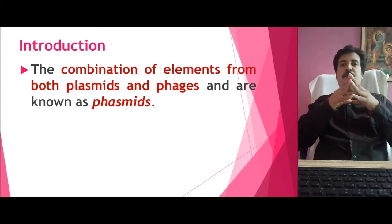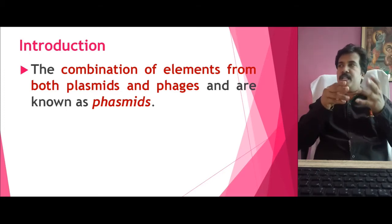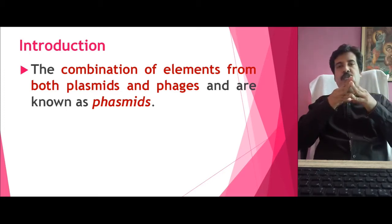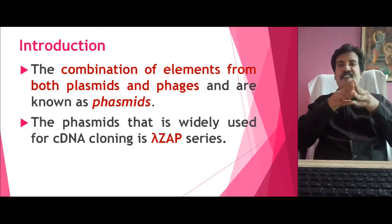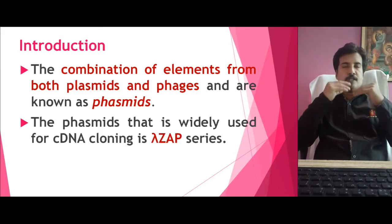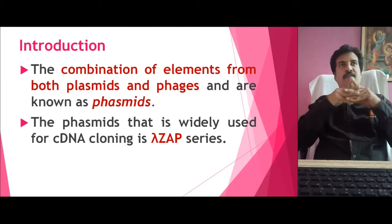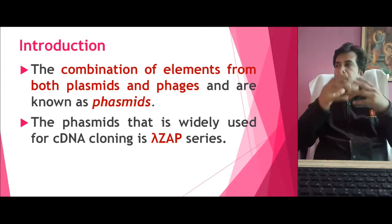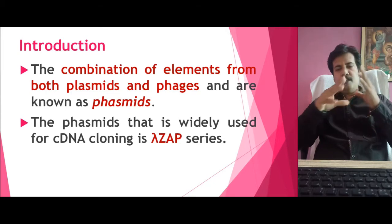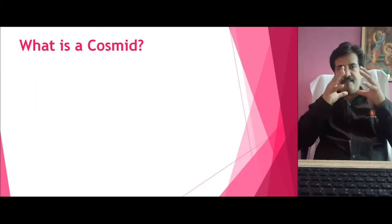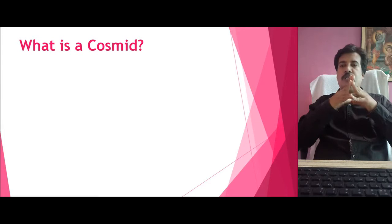Combining these elements, both the Plasmid and the Bacteriophage, into another engineered vector would be helpful. The combination of both was collectively called a Phasmid. The Phasmid generally started being widely used in various recombinant DNA technology and especially in cDNA cloning. The most widely used Phasmid is the Lambda-Zap series of vectors. This was the basic idea where Cosmids started coming upon and being widely used.